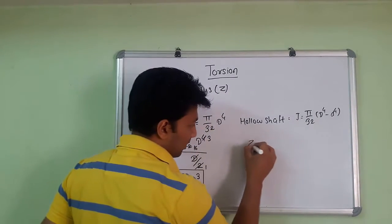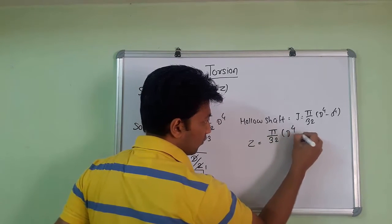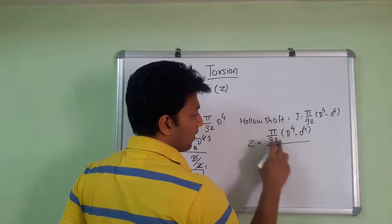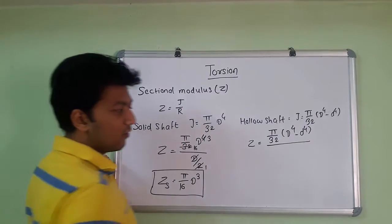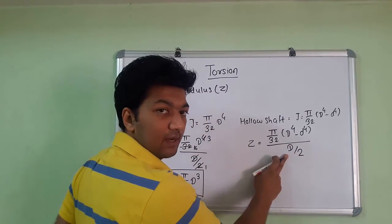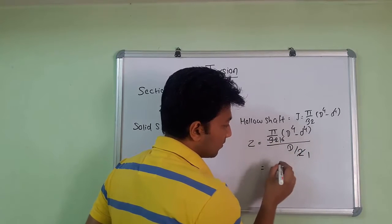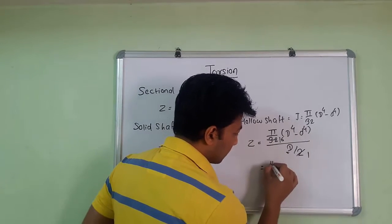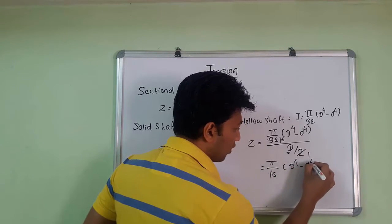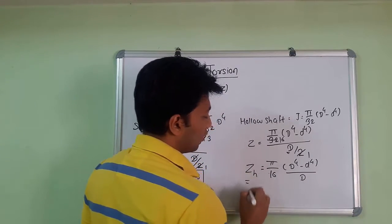Z will be J by R. We put the value of J, that is pi by 32 capital D raised to 4 minus small d raised to 4, divided by R. Here we have to put R value. R value will be capital D by 2. Remember to always put capital D by 2. So this 2 gets cancelled, giving 16, and this D remains as it is. So pi by 16 capital D raised to 4 minus small d raised to 4, divided by D. This is the section modulus for the hollow shaft.